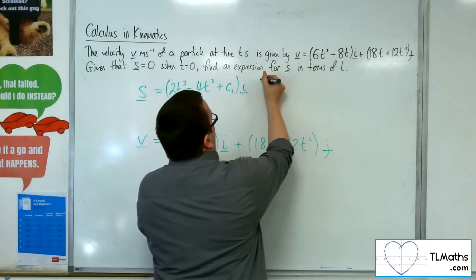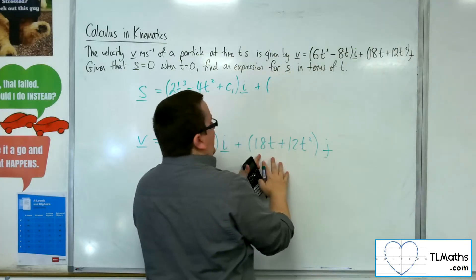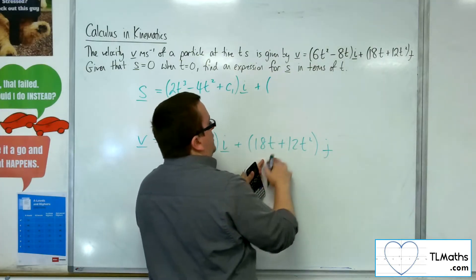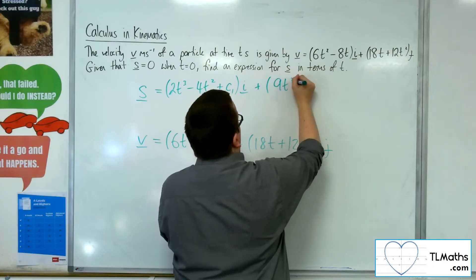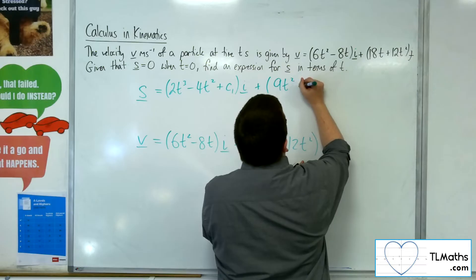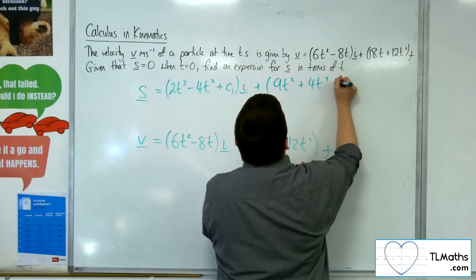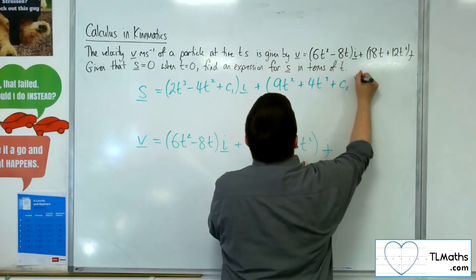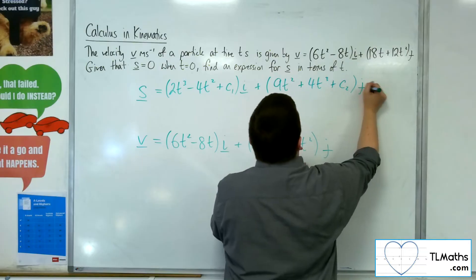Now we move on to the j component. So 18t will integrate to 9t squared, and 12t squared will integrate to 4t cubed. And we'll have another constant of integration, which I'll label as c2, j.